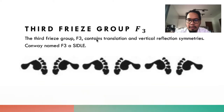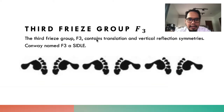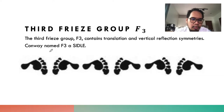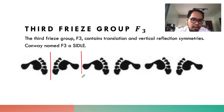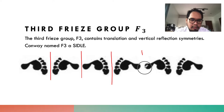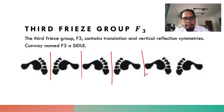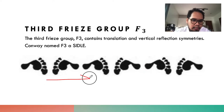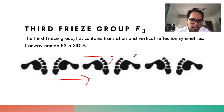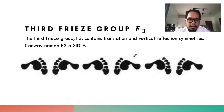F-sub-3 contains a translation and a vertical reflection symmetry. Conway called this a 'sidle.' You can imagine there is a line of reflection here — you reflect; there's another line of reflection — you reflect; and so on. Or you can imagine translating the motif and then reflecting it, then translating again and reflecting, and so on.